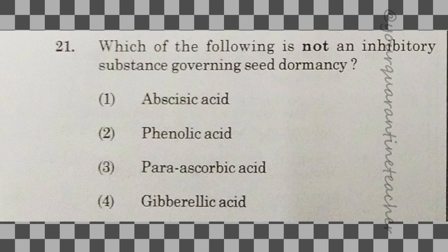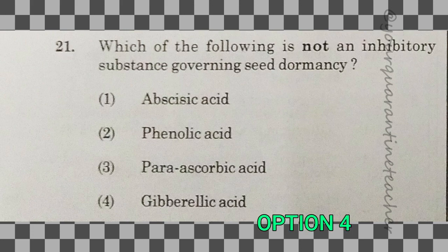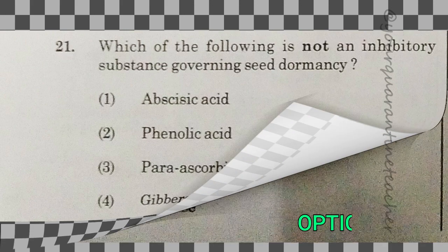21st question: which of the following is NOT an inhibitory substance governing seed dormancy? The answer is option 4 — gibberellic acid.